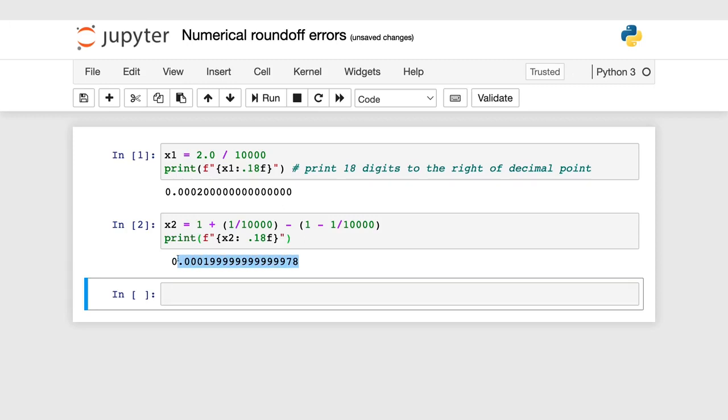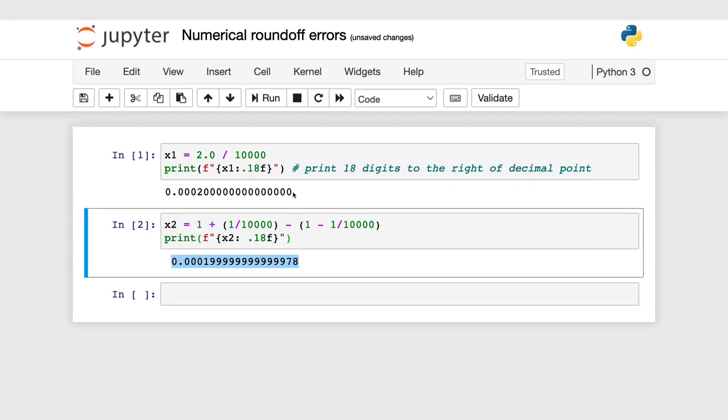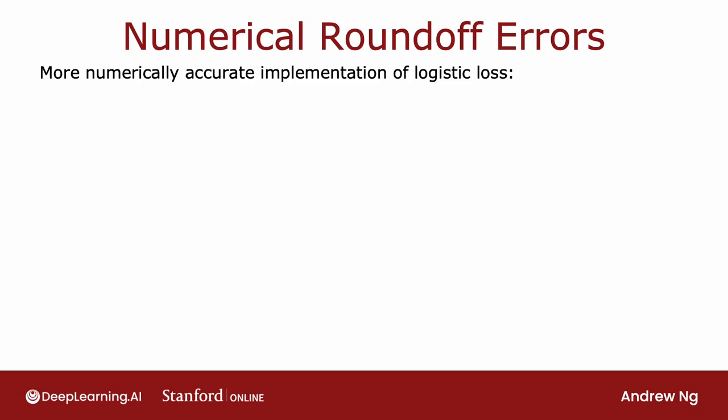Because a computer has only a finite amount of memory to store each number, called a floating point number in this case, depending on how you decide to compute the value 2 over 10,000, the result can have more or less numerical round-off error. It turns out that while the way we have been computing the cost function for Softmax is correct, there's a different way of formulating it that reduces these numerical round-off errors, leading to more accurate computations within TensorFlow.